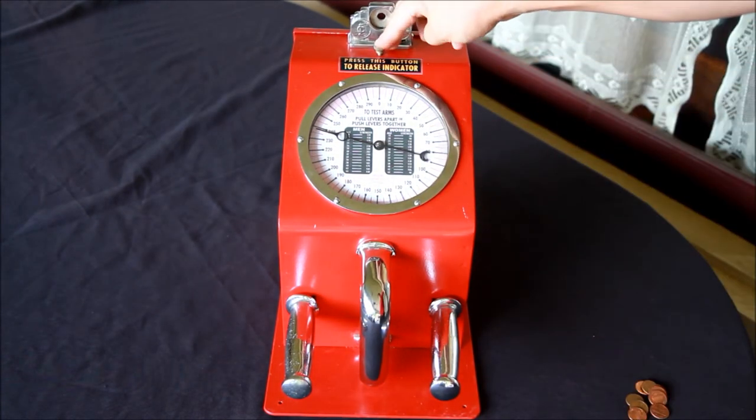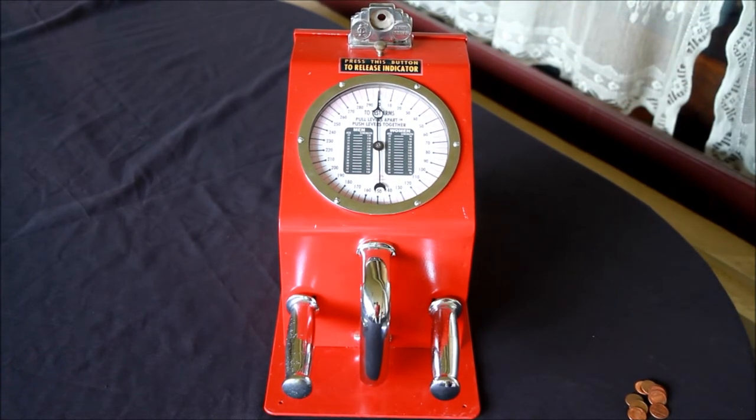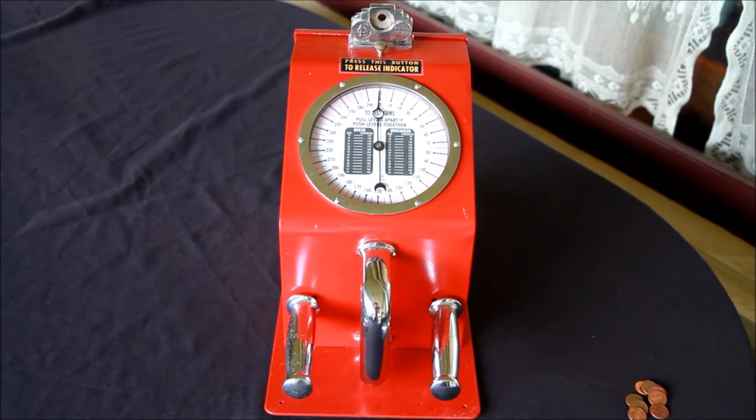So we set it and let the next person come along and try it. So this is the Gottlieb Deluxe 3-Way Strength Tester, manufactured probably in the late 1930s into the early 1940s. These were very popular machines for general store kind of use and penny arcades and so on.